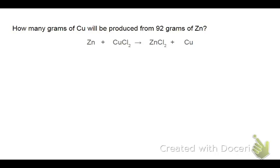We have one zinc on each side, one copper on each side of the reaction arrow, and two chlorines. So luckily, this one's already done. But again, our very first step is always to make sure that we have a balanced equation.